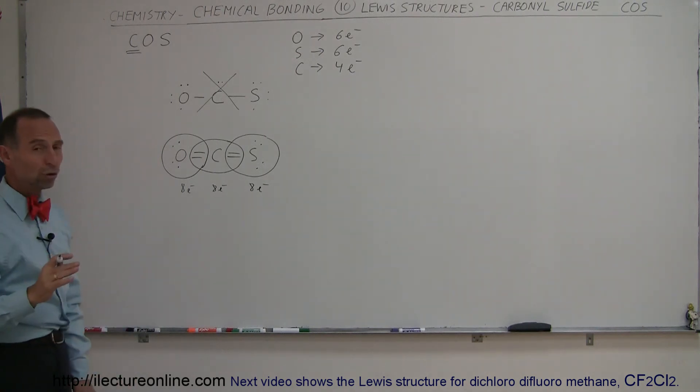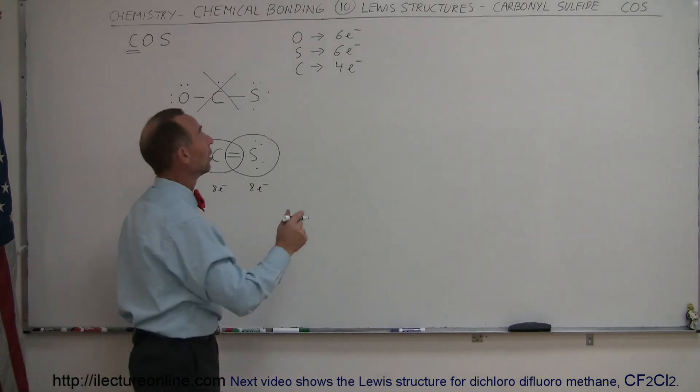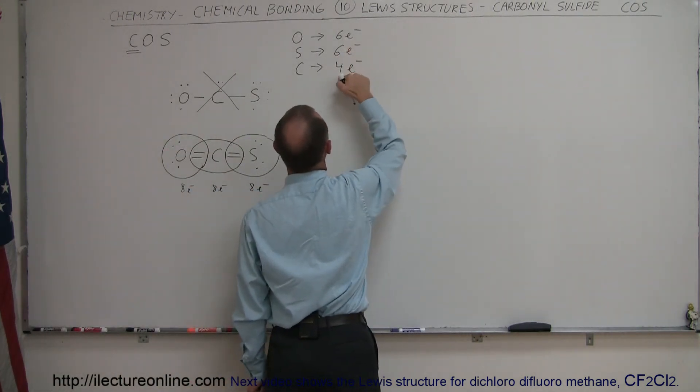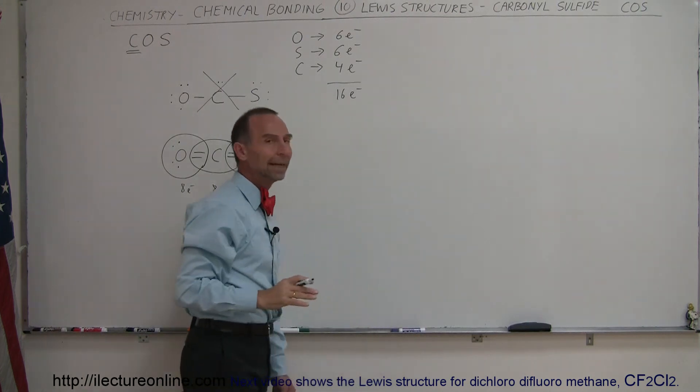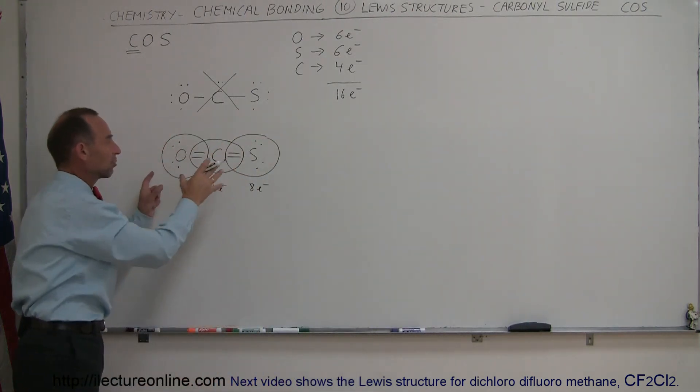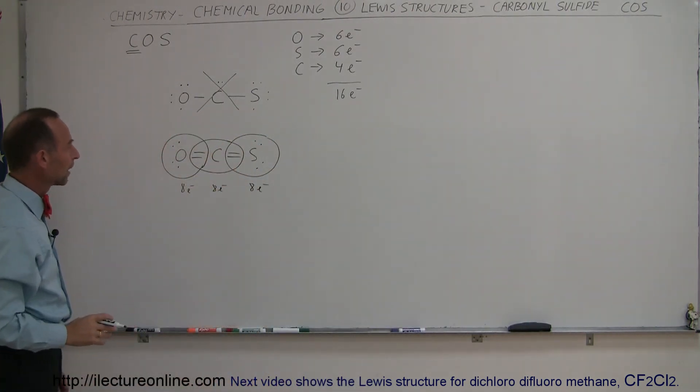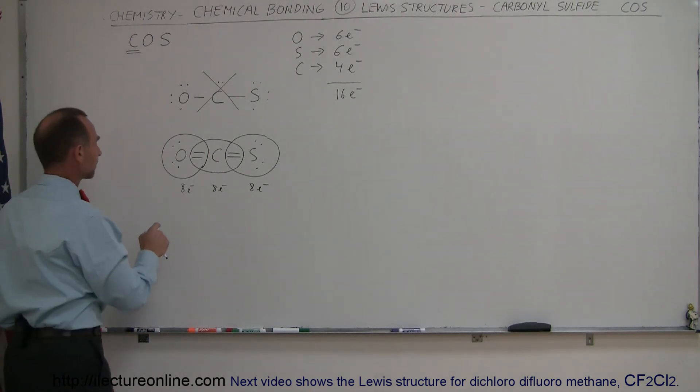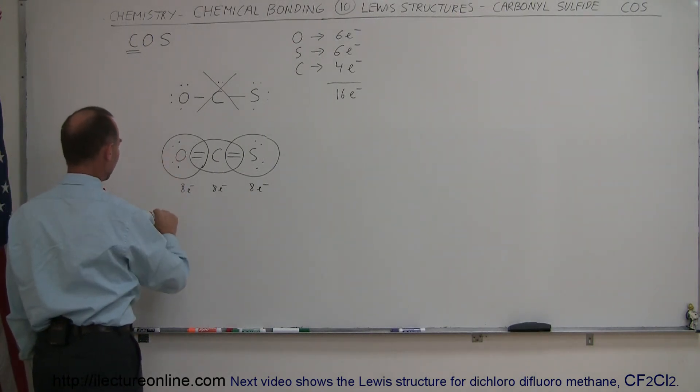Next, we want to make sure that the total number of valence electrons equals the total number of valence electrons I started with. Notice that six plus six plus four, that is, 16 valence electrons were available in all the bonds and all the free electrons in the valence orbitals. Let's see if we still have 16 electrons. Two plus two is four electrons for oxygen, and four electrons for sulfur.